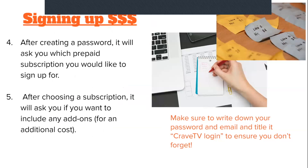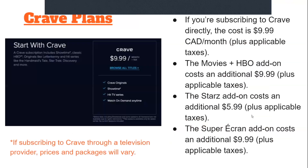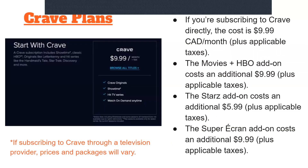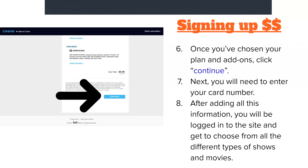After you create a password, it will ask which subscription you would like. After choosing a subscription, it will ask if you want to include any add-ons for an additional cost. Remember to write down your password and email. Crave's base plan is $9.99 Canadian per month plus taxes. The Movies and HBO add-on is an additional $9.99 plus taxes, the Stars add-on is $5.99, and the Super add-on (French content) is $9.99. Once you've chosen your plan, click Continue.